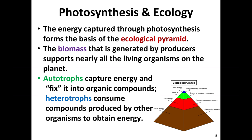All organisms require an input of energy to survive. We can classify them into two broad categories depending on how they obtain that energy. We have autotrophs, typically known as producers, which are able to transform energy from the environment, like sunlight or chemicals, and produce organic compounds. Then we have heterotrophs, typically referred to as consumers, who have to rely on organic compounds produced by other organisms.